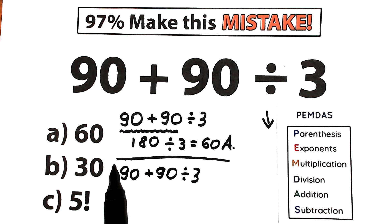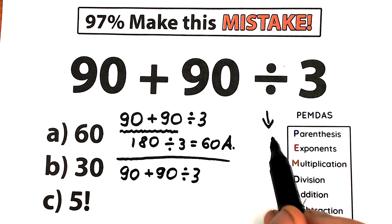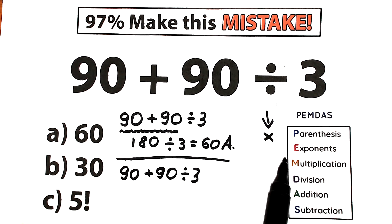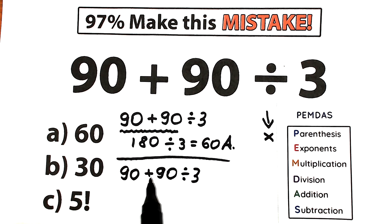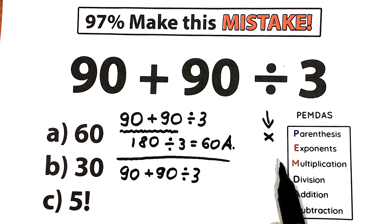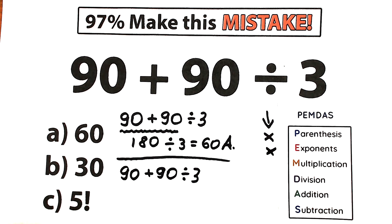First step is parentheses — let's look at it. I don't see any parentheses, so we just skip this part. Next, exponents — I don't see any exponents, no squares or cubes here, so we skip this part as well. We don't have any parentheses or exponents, and that's fine.